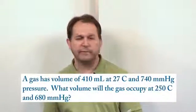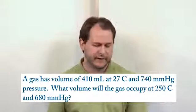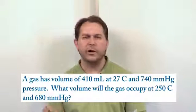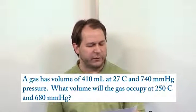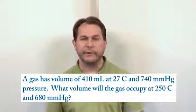So we say a gas for the first problem has a volume of 410 milliliters at 27 degrees Celsius and 740 millimeters of mercury pressure. What volume will the gas occupy at 250 degrees Celsius and 680 millimeters of mercury of pressure?